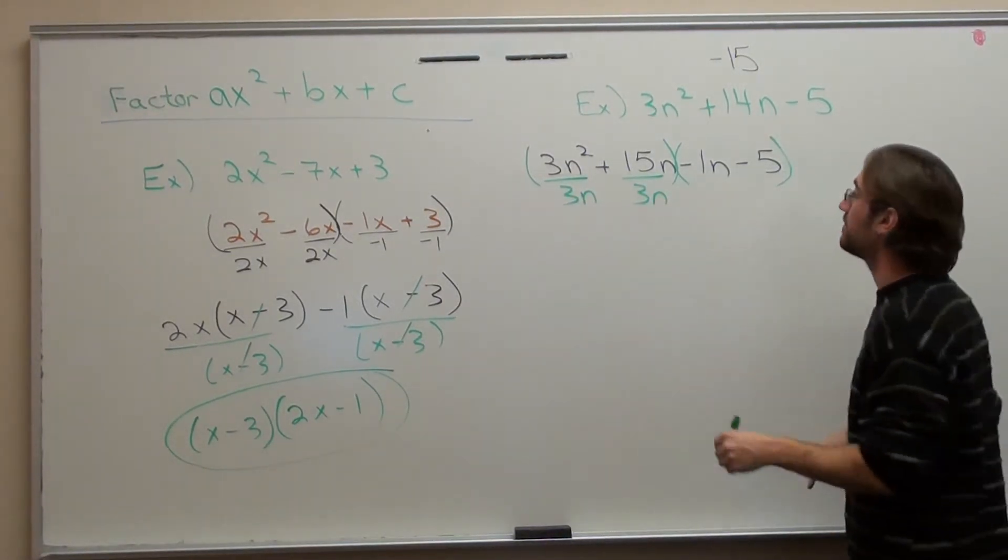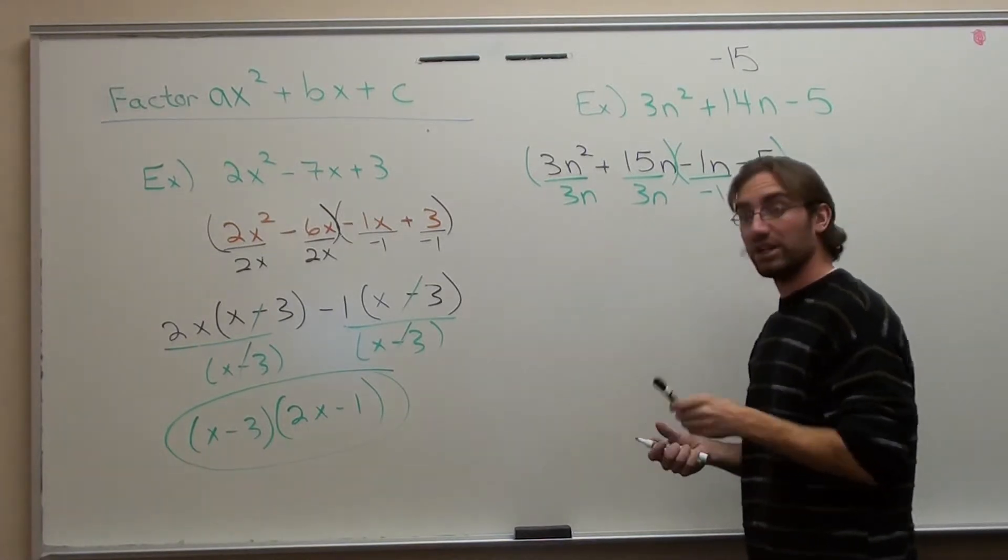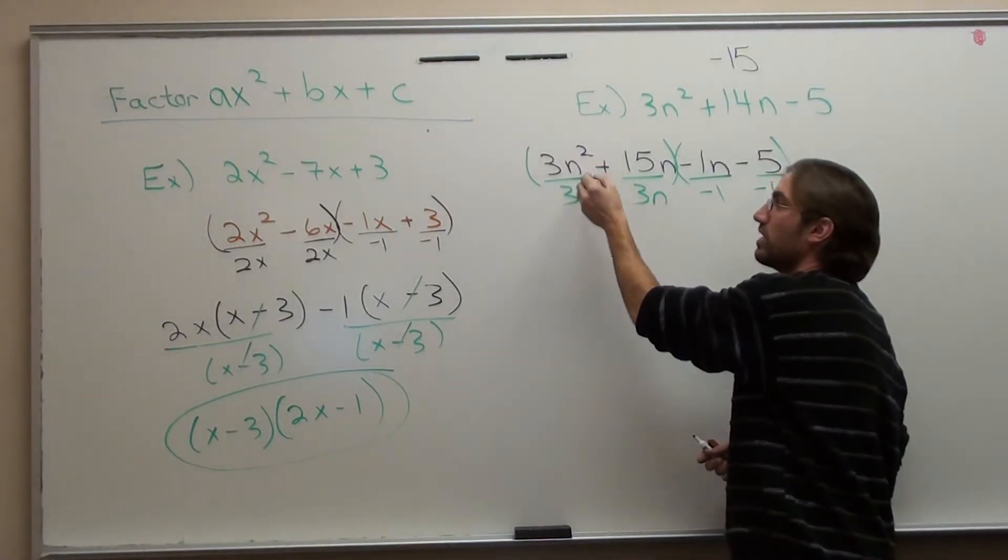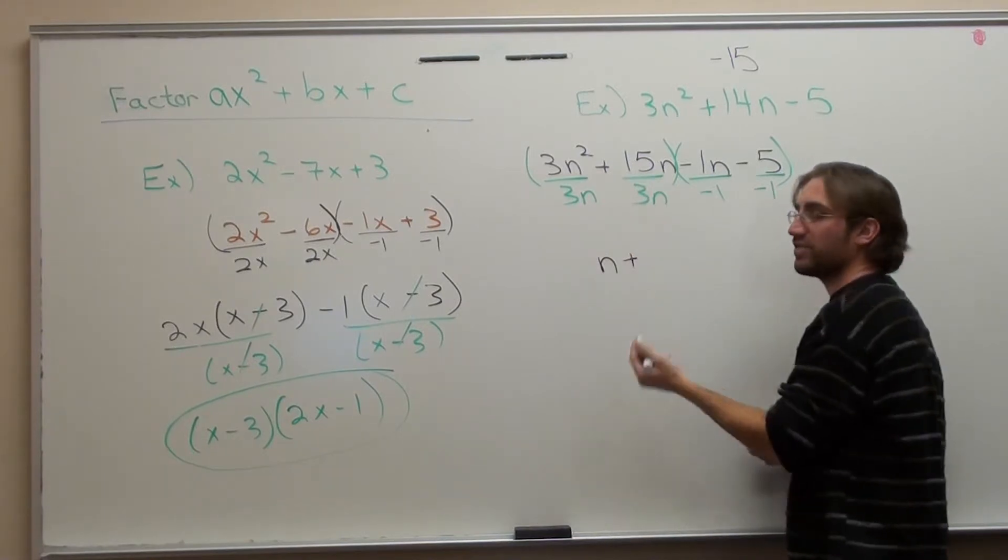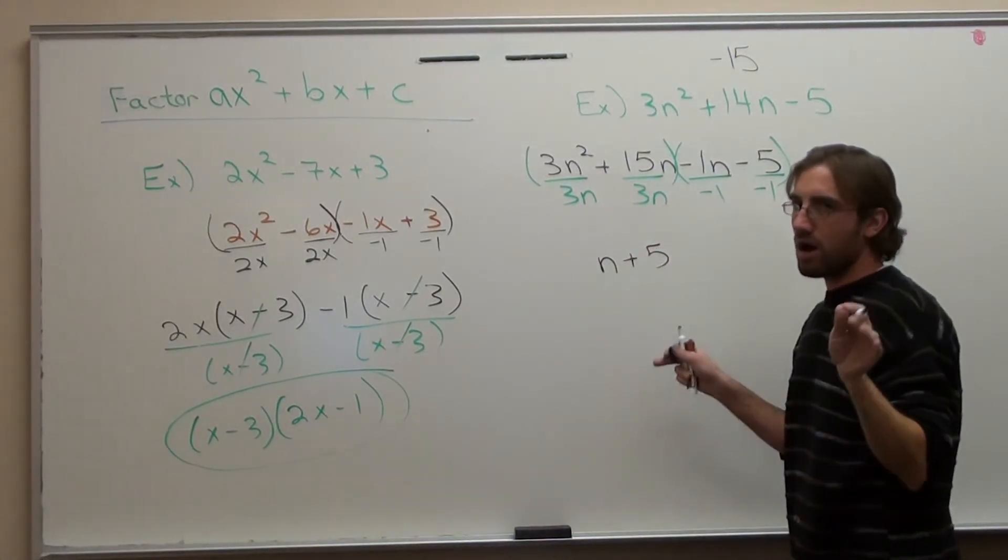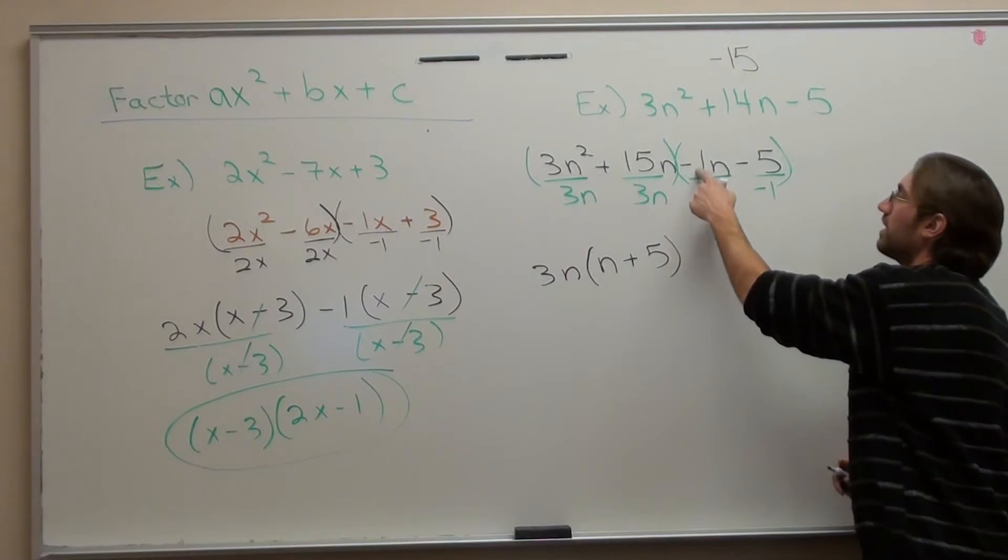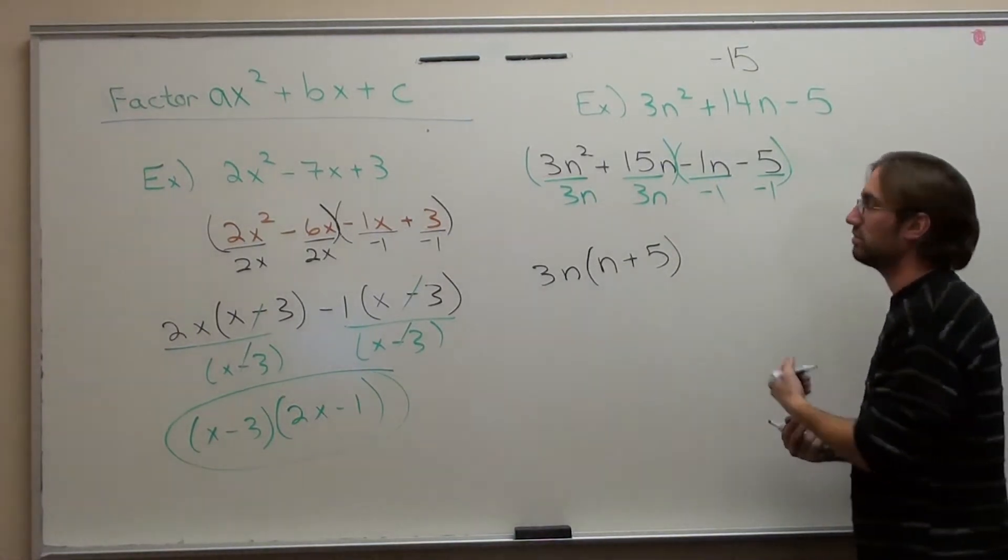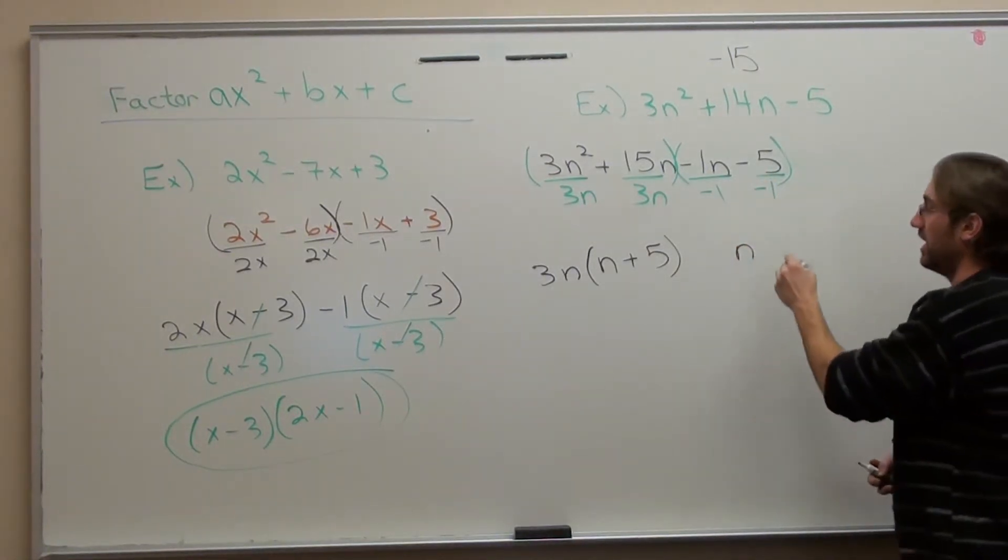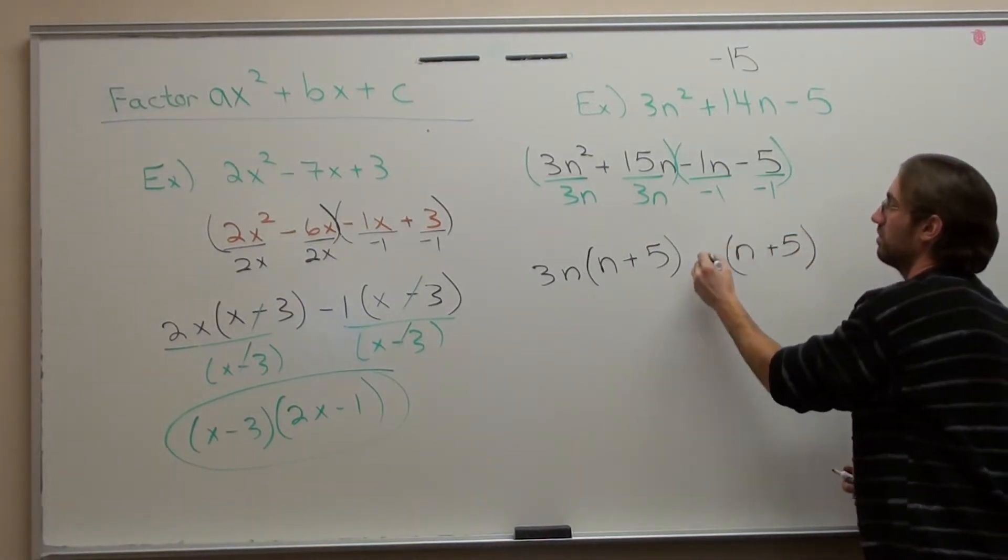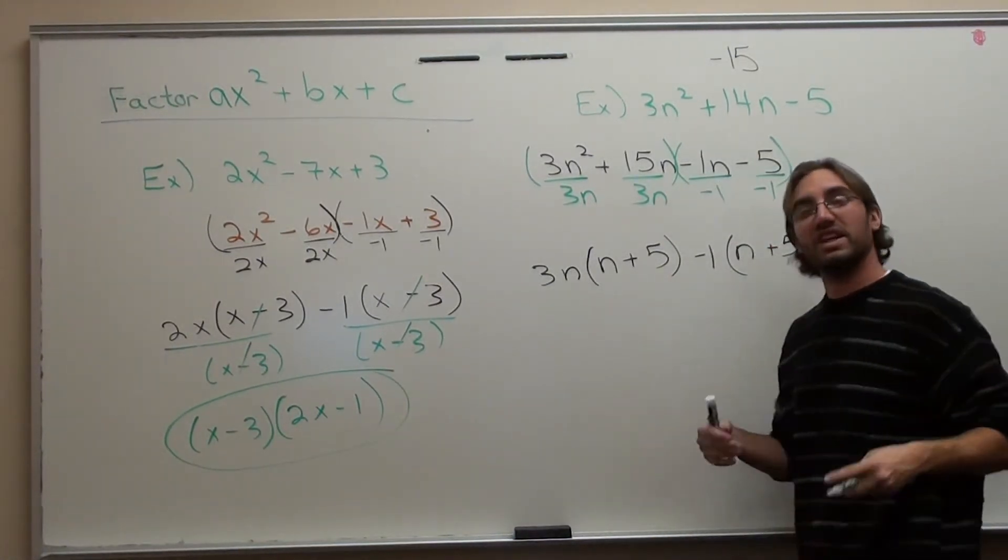I want to factor into groups. So I'm going to take the first two and the last two. What number goes into 3 and 15? 3. What goes into n² and n? n. I never want my first term to be negative. So I'm going to divide by -1. And that's all I can divide by. Now when I do that, 3 divided by 3 is 1, n² divided by n is n, plus 15 divided by 3 is 5. But I have a 3n in front. -1 divided by -1 is 1, and I have an n left over. -5 divided by -1 is positive 5.